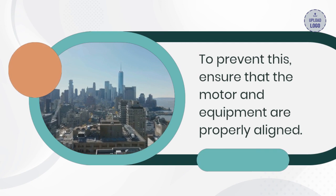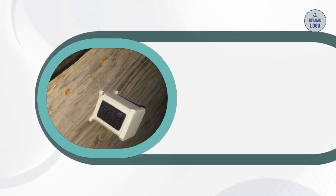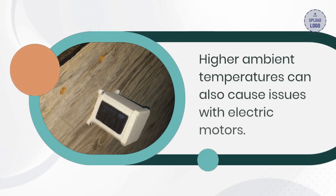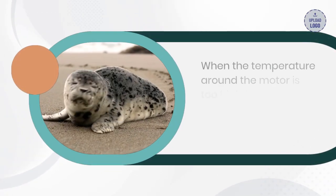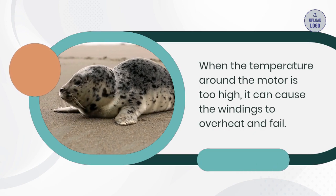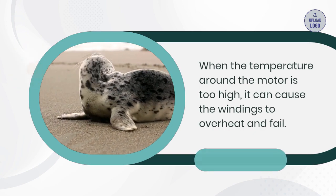Higher ambient temperatures can also cause issues with electric motors. When the temperature around the motor is too high, it can cause the windings to overheat and fail. To prevent this, ensure that the motor is in a well-ventilated area and that the ambient temperature is within the motor's operating range.